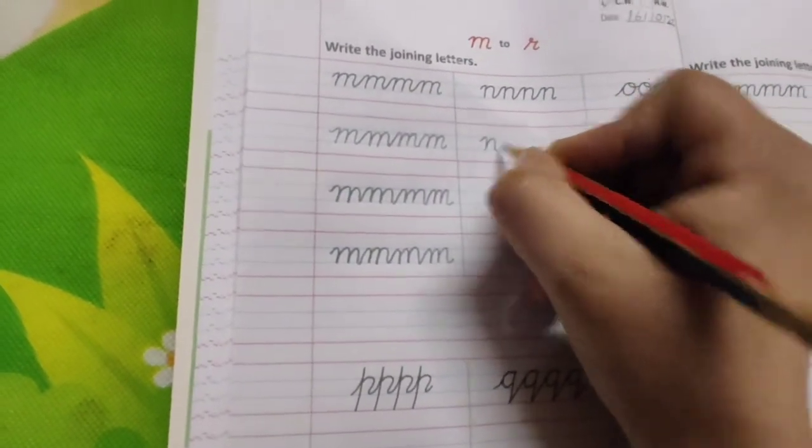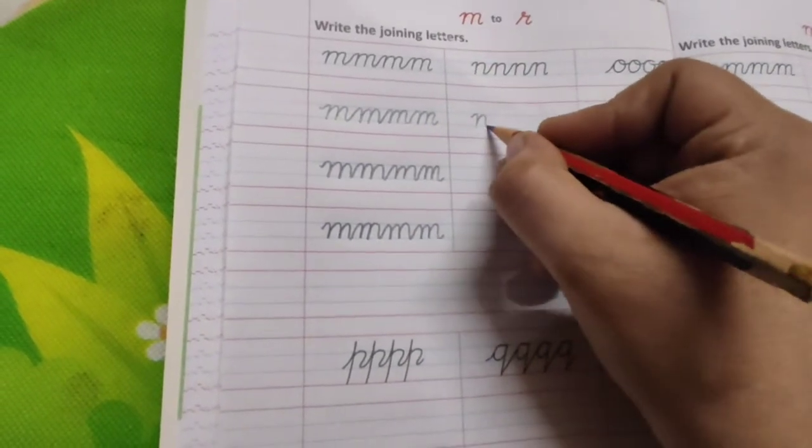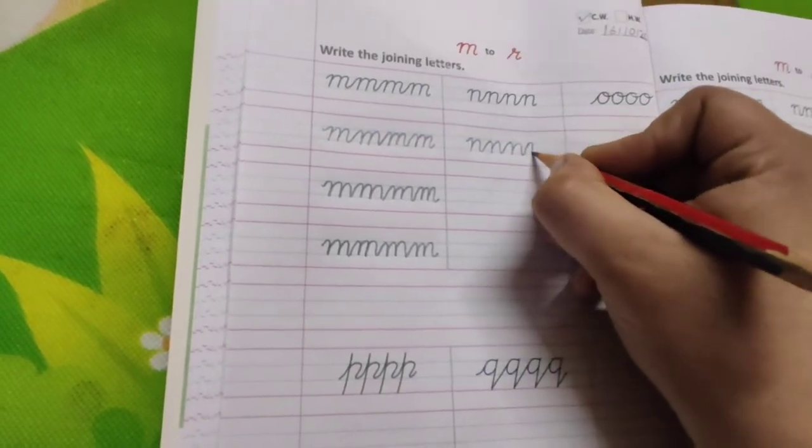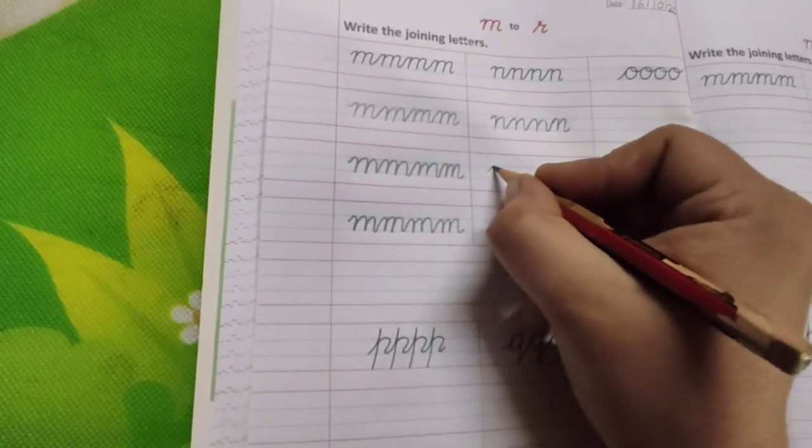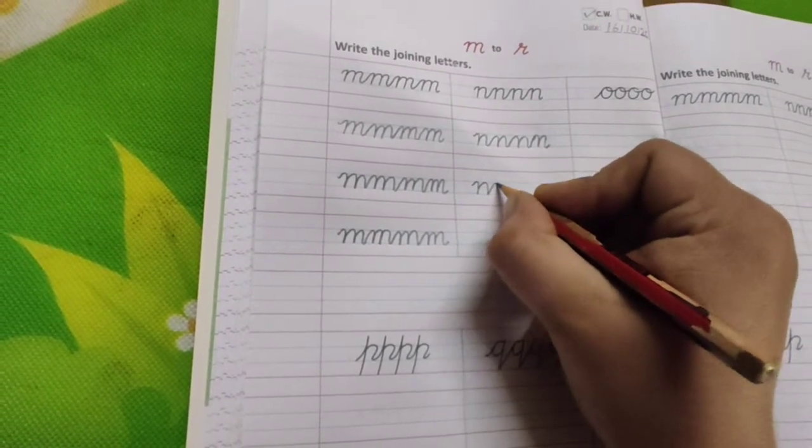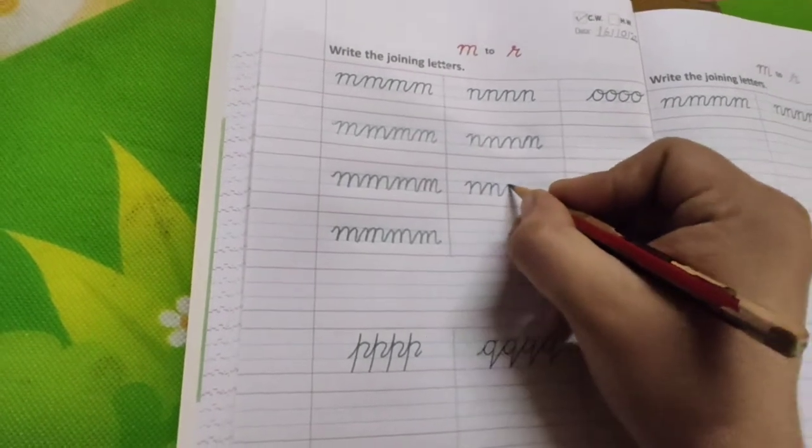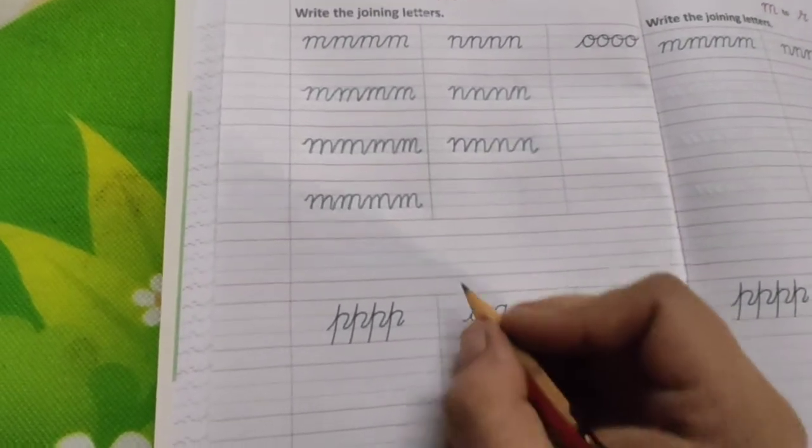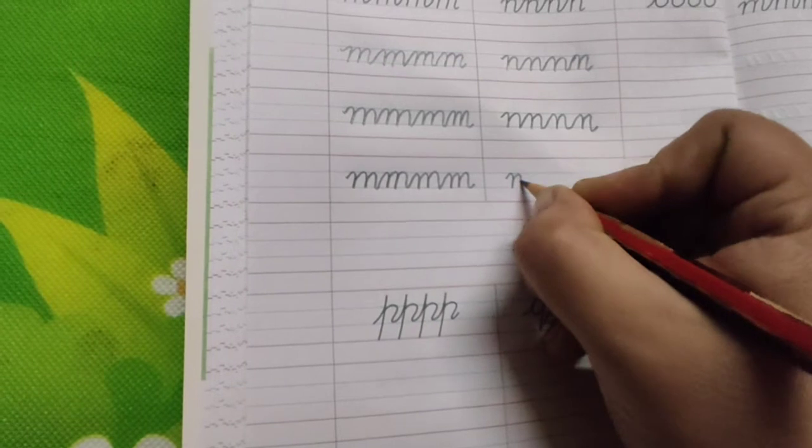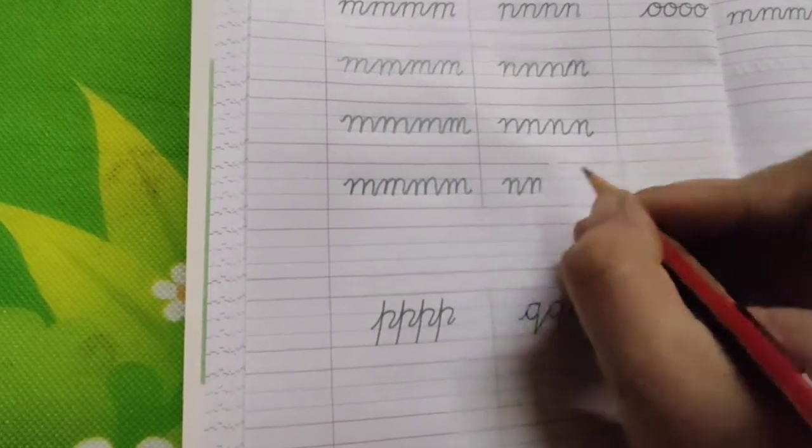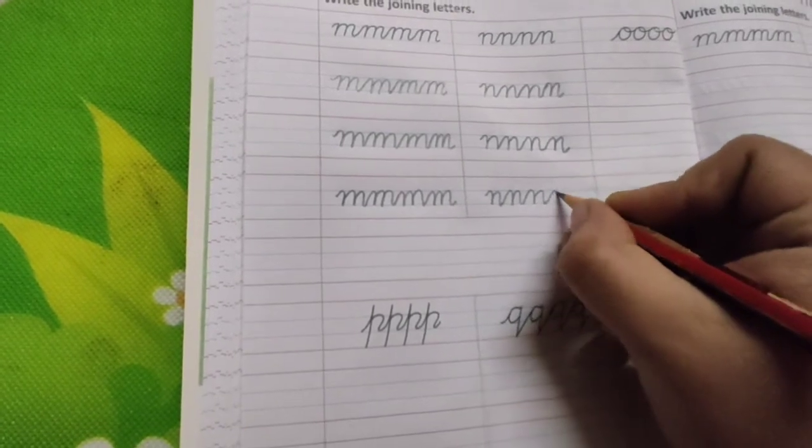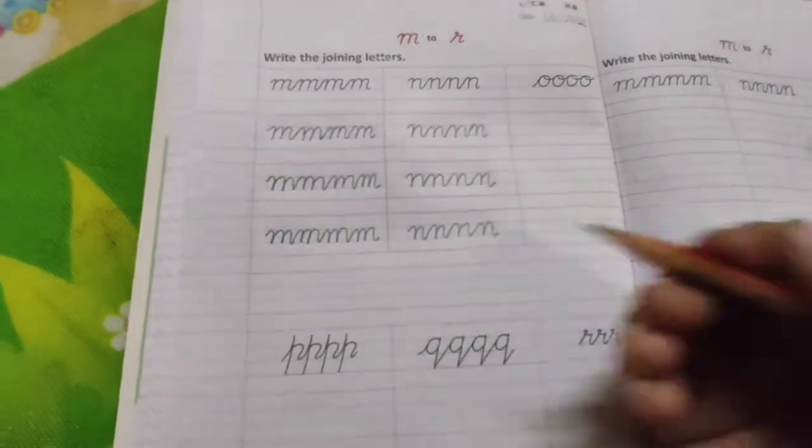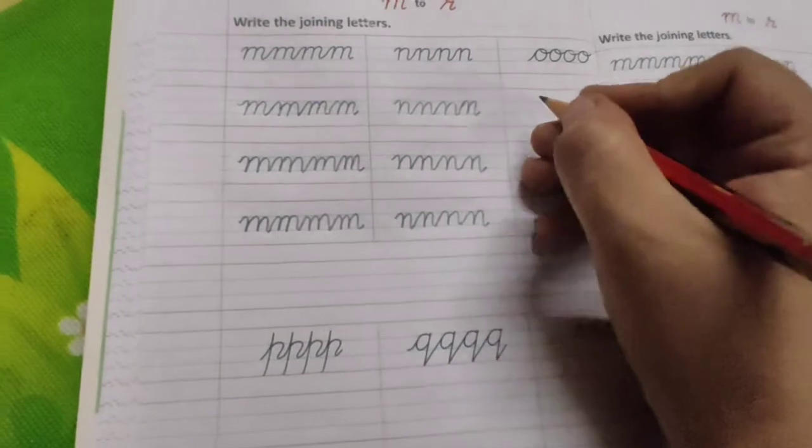Write the letter N. Now here you have to draw just one curve. Again join like this. Downward, upward, downward. Draw your pencil very freely. N. Now again write. N. N. Okay, see I am writing without lifting my pencil again and again. So, in the same way children, you will do.